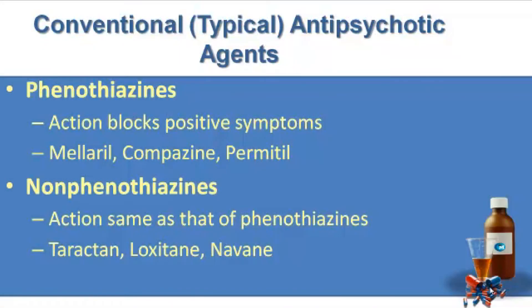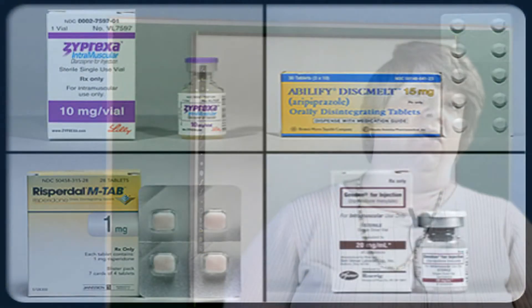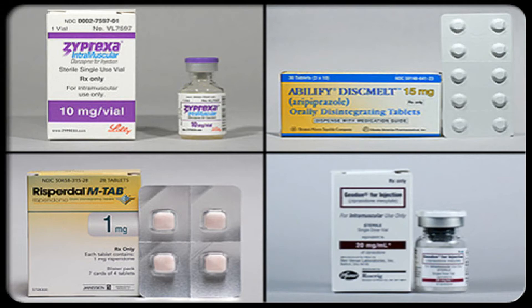With conventional or typical antipsychotic agents, the phenothiazines block the positive symptoms, and examples include Mellaril, Compazine, and Permitil. With the non-phenothiazines, their action is the same as that of phenothiazines, and these include Loxitane and Navane. With our atypical antipsychotics, these are used to treat both positive and negative symptoms, with a less dramatic but still significant side effect profile. Examples include Seroquel, Risperdal, and Zyprexa.